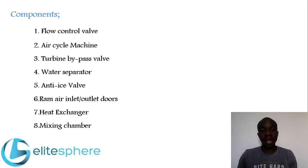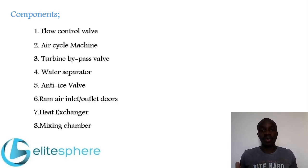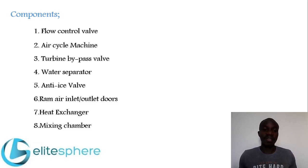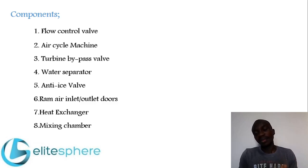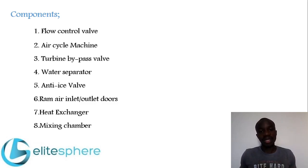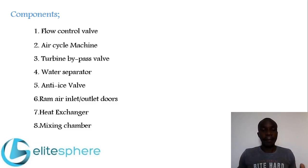The next component is the ram air inlet and outlet doors. The ram air controls and regulates the amount of air that is allowed to flow across the heat exchanger. The heat exchanger itself is where the primary cooling of the bleed air takes place. Once the bleed air comes from the compressor in the air cycle machine, it goes through the heat exchanger where it is cooled by the ram air passing across it.